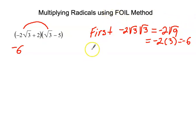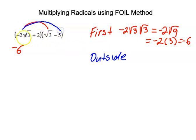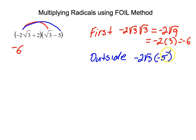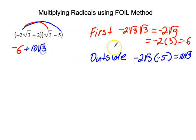The O stands for outside term. We have negative two square root of three times negative five — those two terms are on the outside. I put negative five in parentheses because it is negative; without parentheses it might look like minus five instead of times negative five. This equals plus ten square root of three.